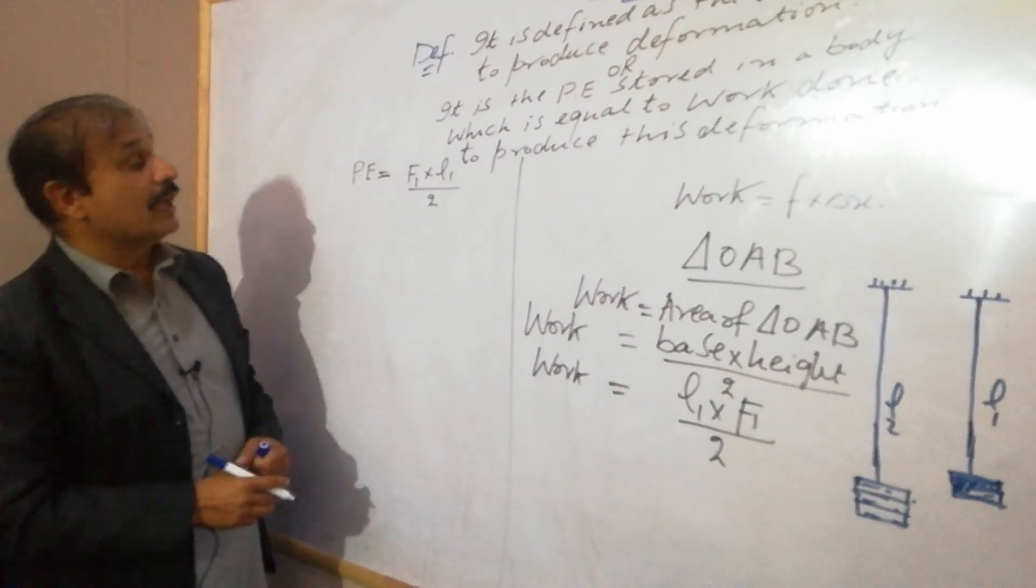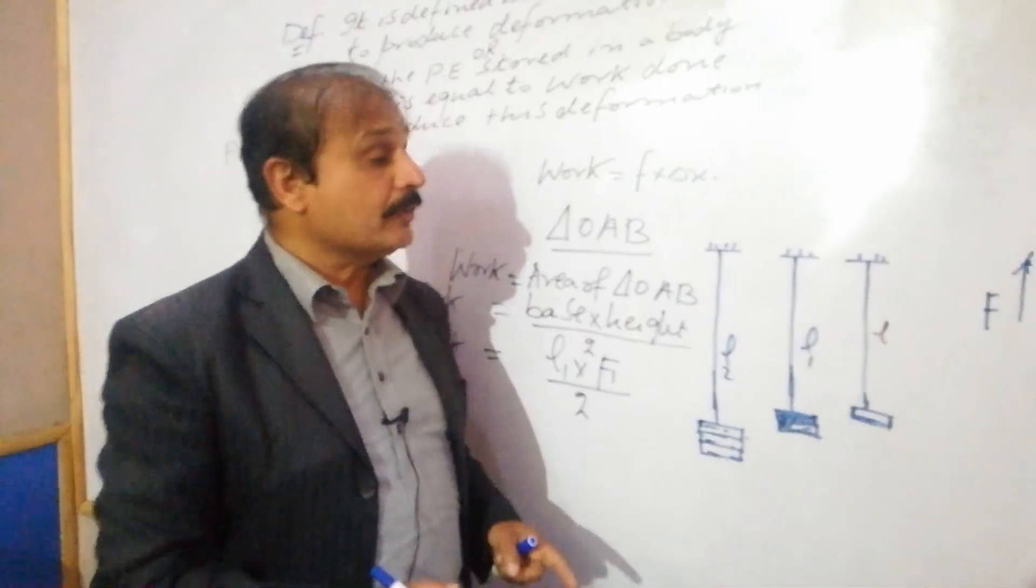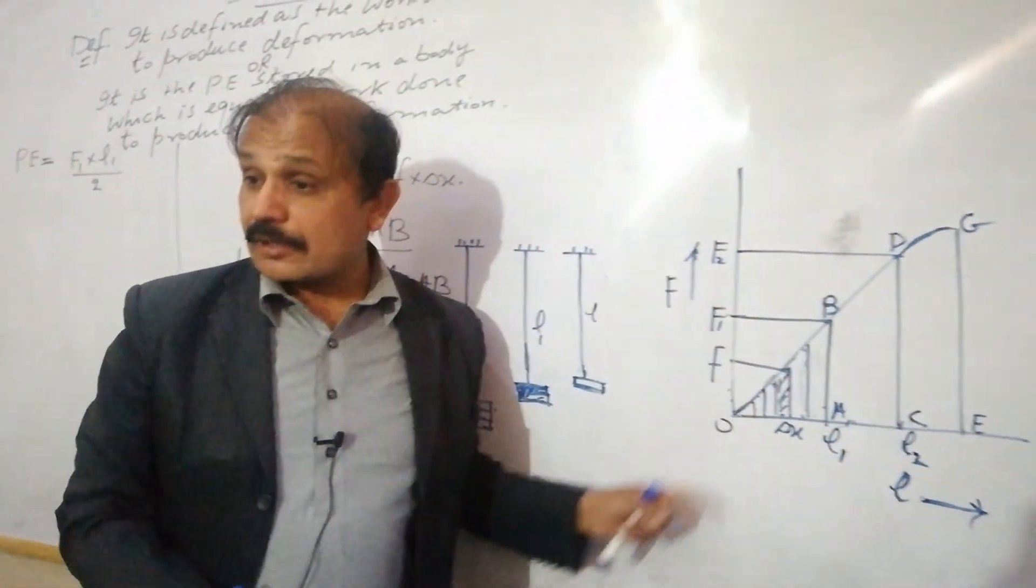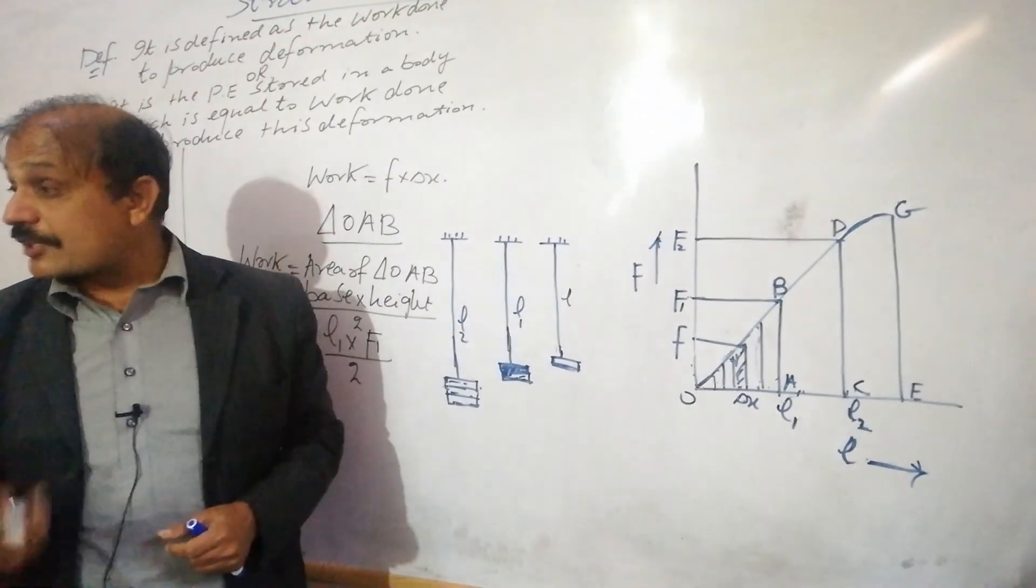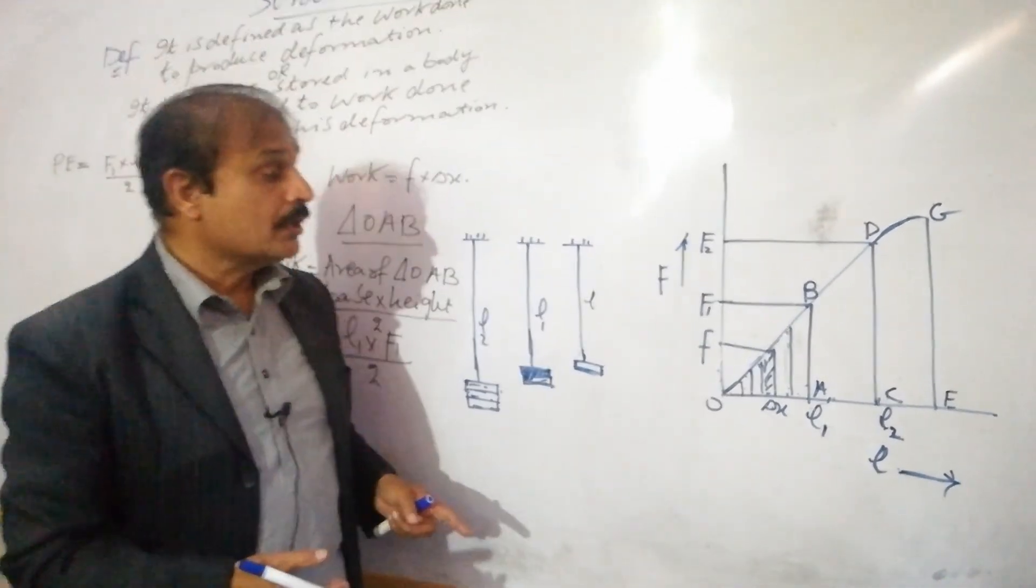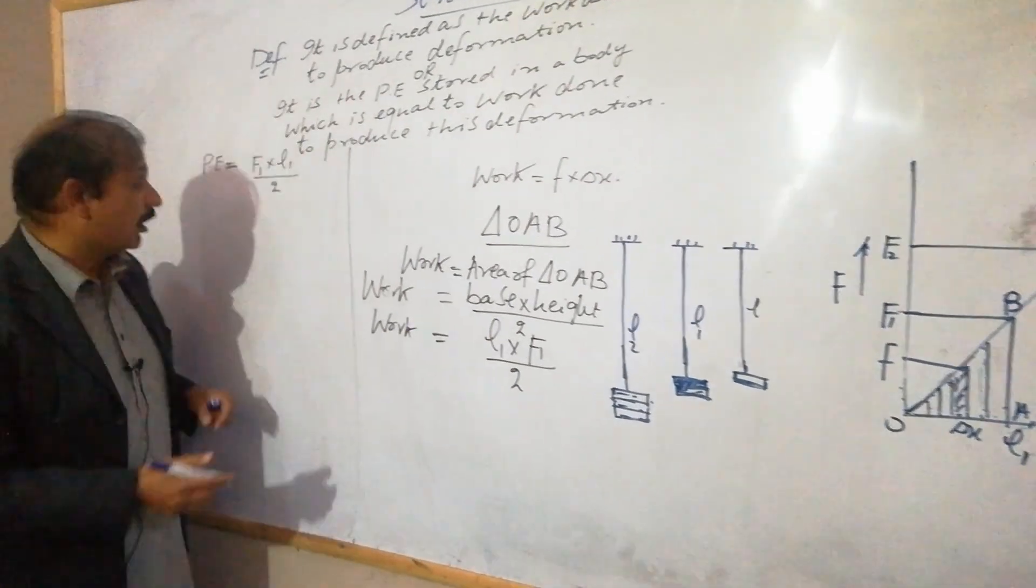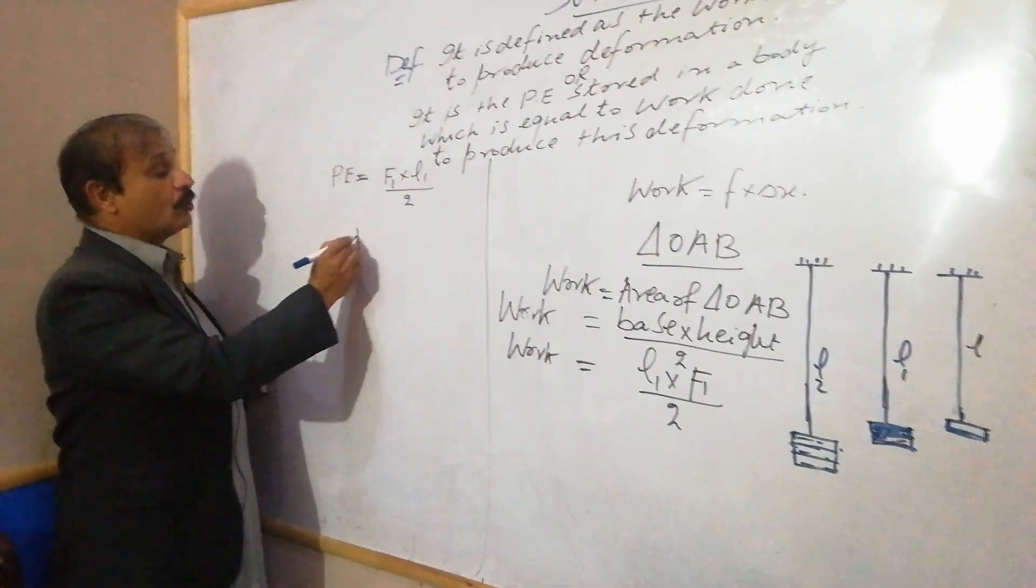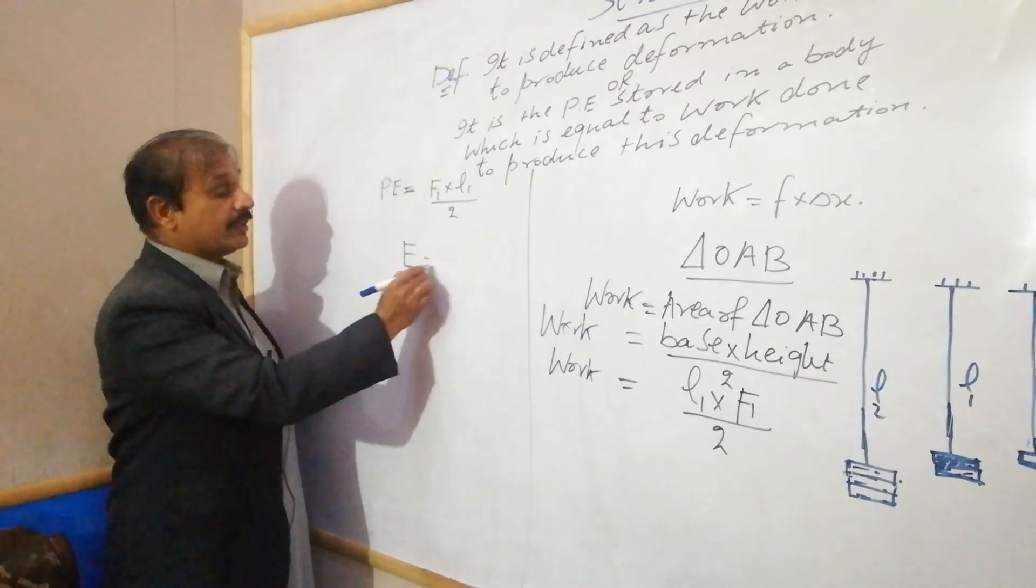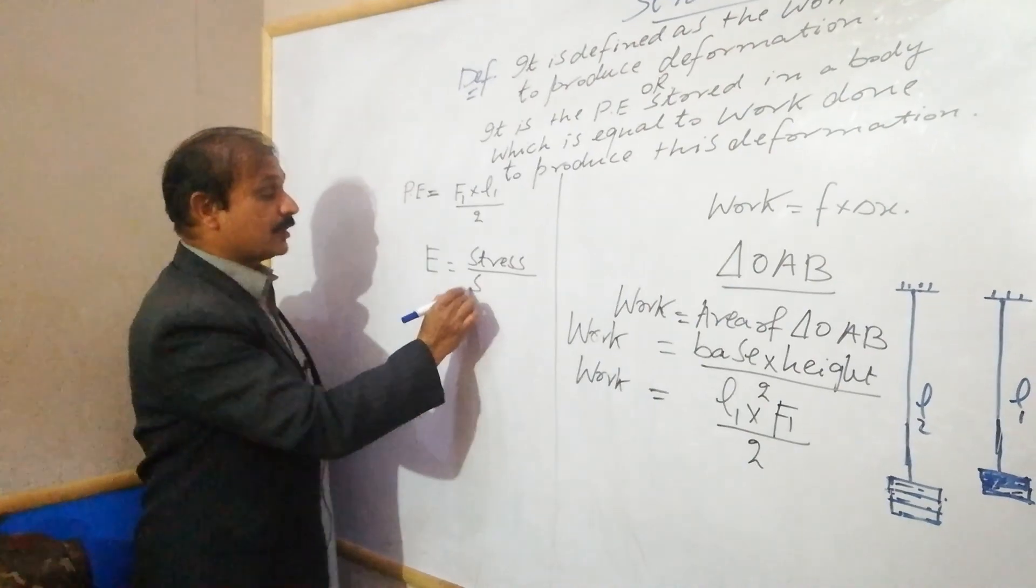Now secondly, we apply the modulus of elasticity because this wire depends on the nature of the material. If there is copper wire, it is different. If you take silver wire, it is different. This means you have to apply the modulus of elasticity. We apply E, and E equals stress over strain.